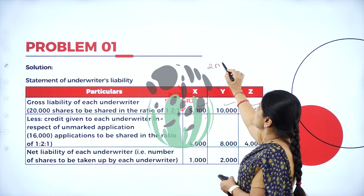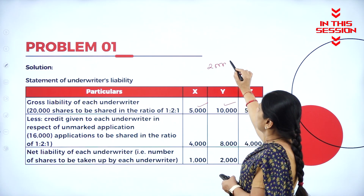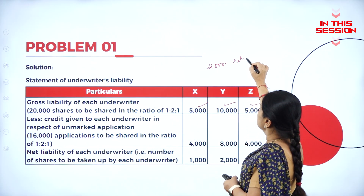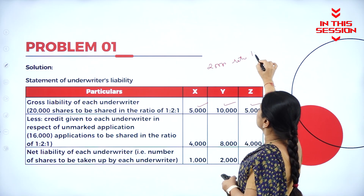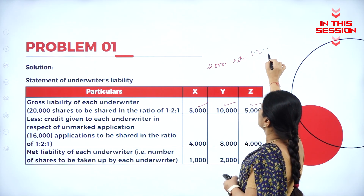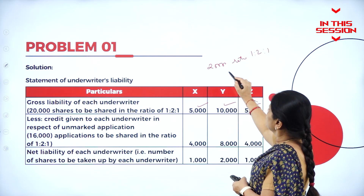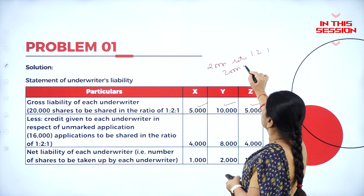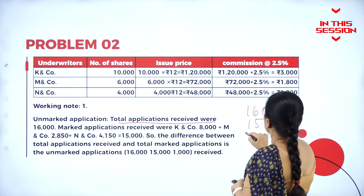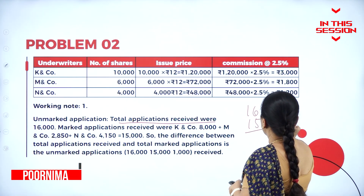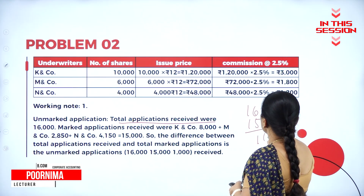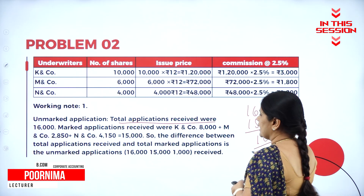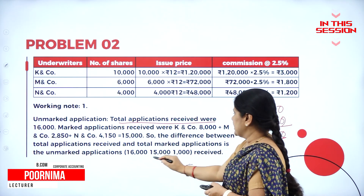20,000 shares has been divided in the ratio of 1 is to 2 is to 1. So it will be 20,000 into 1 by 4. So whatever is the balance, 1,000, that becomes the unmarked application.